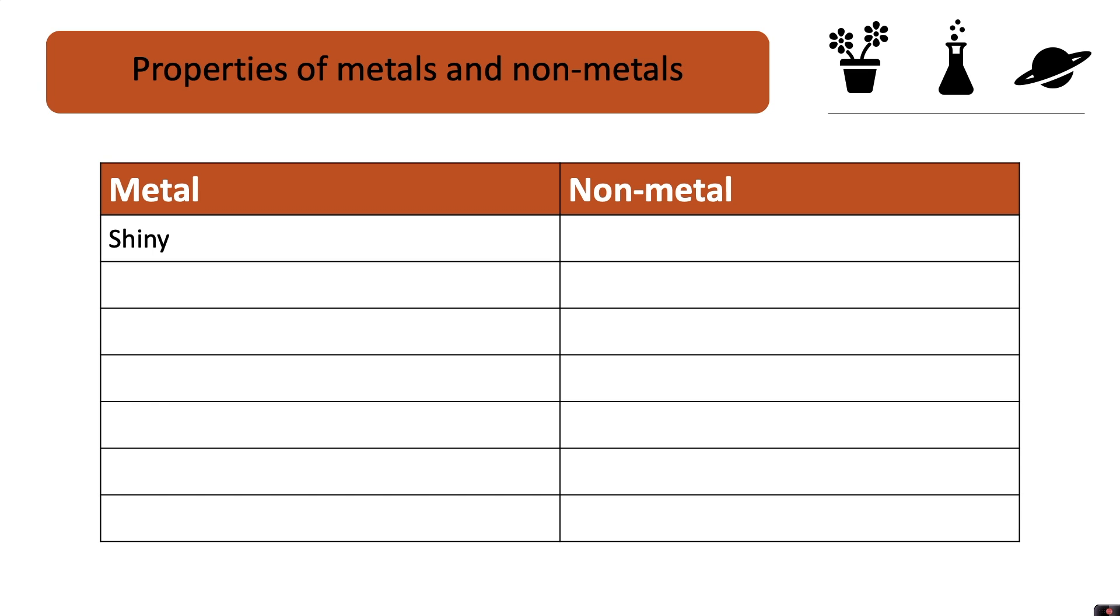Metals are shiny. Non-metals are dull. Metals are sonorous, which means they ring when they are hit. Non-metals are not sonorous.